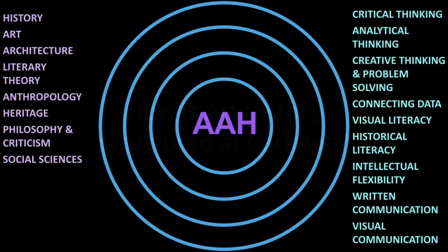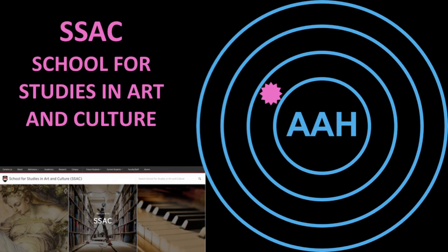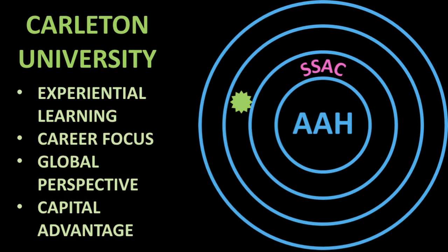Let's look at how the study of art history is structured in the Carleton program. I've organized the program in a series of concentric circles, with Art and Architectural History in the center, along with all the attributes mentioned earlier. Art and Architectural History is situated within a larger circle known as the School for Studies in Art and Culture. It's a larger organization within Carleton that contains four programs: art history, history and theory of architecture, music, and film studies. This gives us the advantage of having the weight and resources of a much larger department, even though art history itself is quite small - which also means you enjoy the benefits of a smaller program, including lots of individual attention.